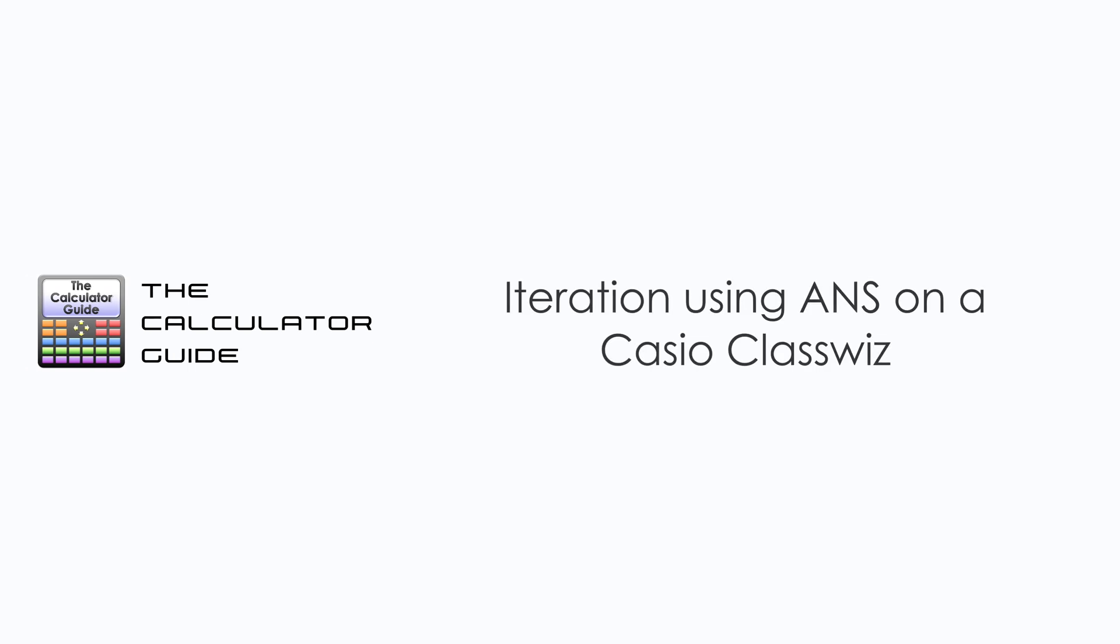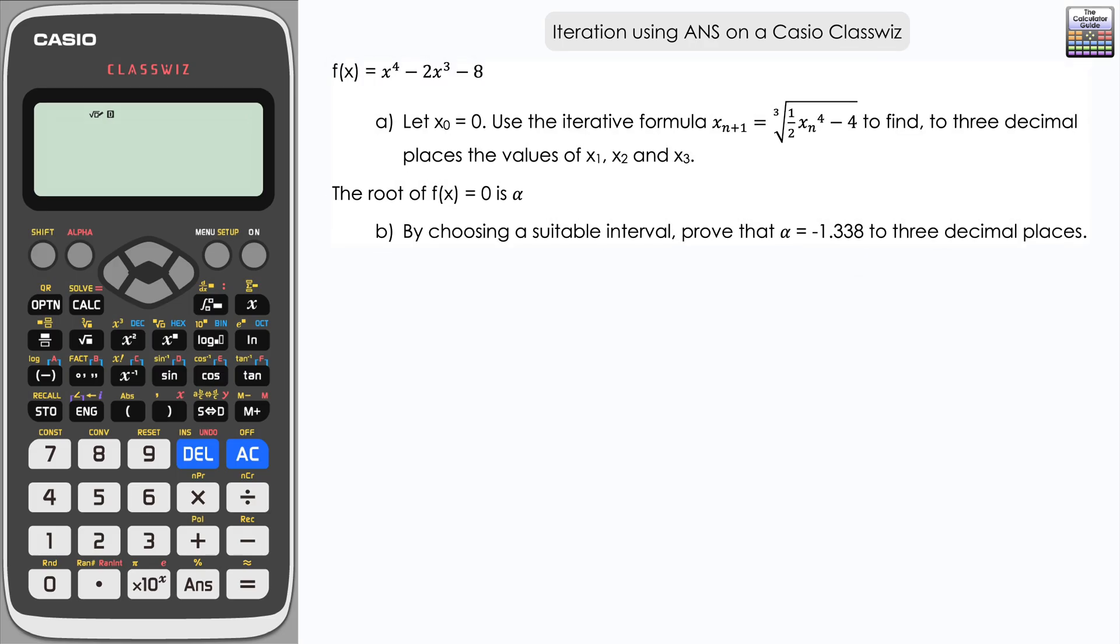Hello and welcome to the Calculator Guide video on iteration using ANS on a Casio ClassWiz. Let's look at the question: f(x) equals x to the power 4 minus 2x cubed minus 8. For part a, let x0 equals 0. We've got to use the iterative formula as shown to find, to three decimal places, the values of x1, x2, and x3. Notice how the iterative formula is a rearrangement of the f(x) that we have.